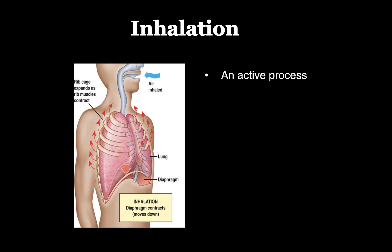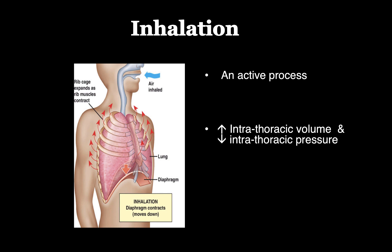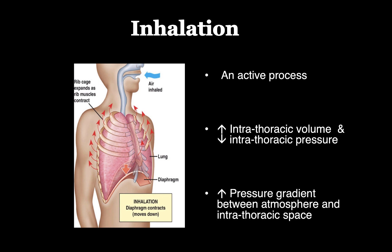Inspiration is an active process initiated by diaphragmatic contraction, which allows the diaphragm to move downward into the abdomen and the intercostal muscles to move the ribcage outward. The size of the thorax increases, thus increasing intrathoracic volume. As intrathoracic volume increases, the pressure inside the thorax decreases and sets up a pressure gradient between atmospheric pressure, allowing gas to flow from higher atmospheric pressure into the alveoli.